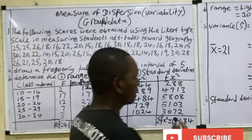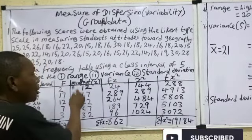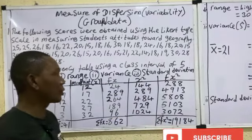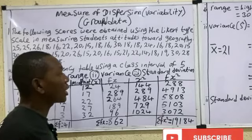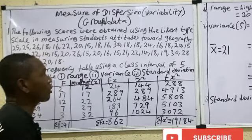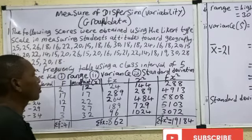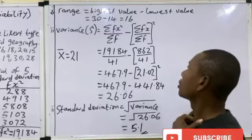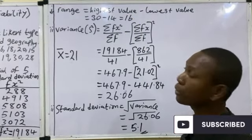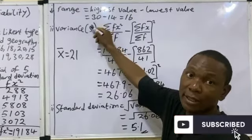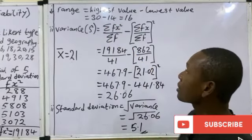Now let's calculate the range, variance and standard deviation. The range is the highest value minus the lowest value. The highest value is 30 and the lowest value is 14, so the range equals 30 minus 14, which is 16.